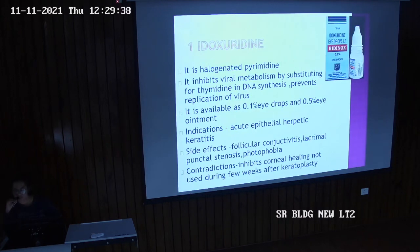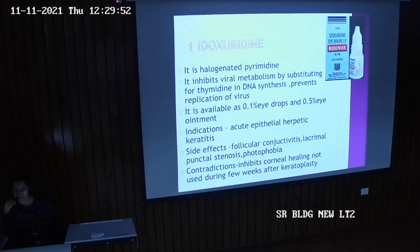Idoxuridine is a halogenated pyrimidine and it inhibits viral metabolism by substituting for thymidine in DNA synthesis. It prevents replication of the virus. It is available as 0.1% eye drops and 0.5% eye ointment.